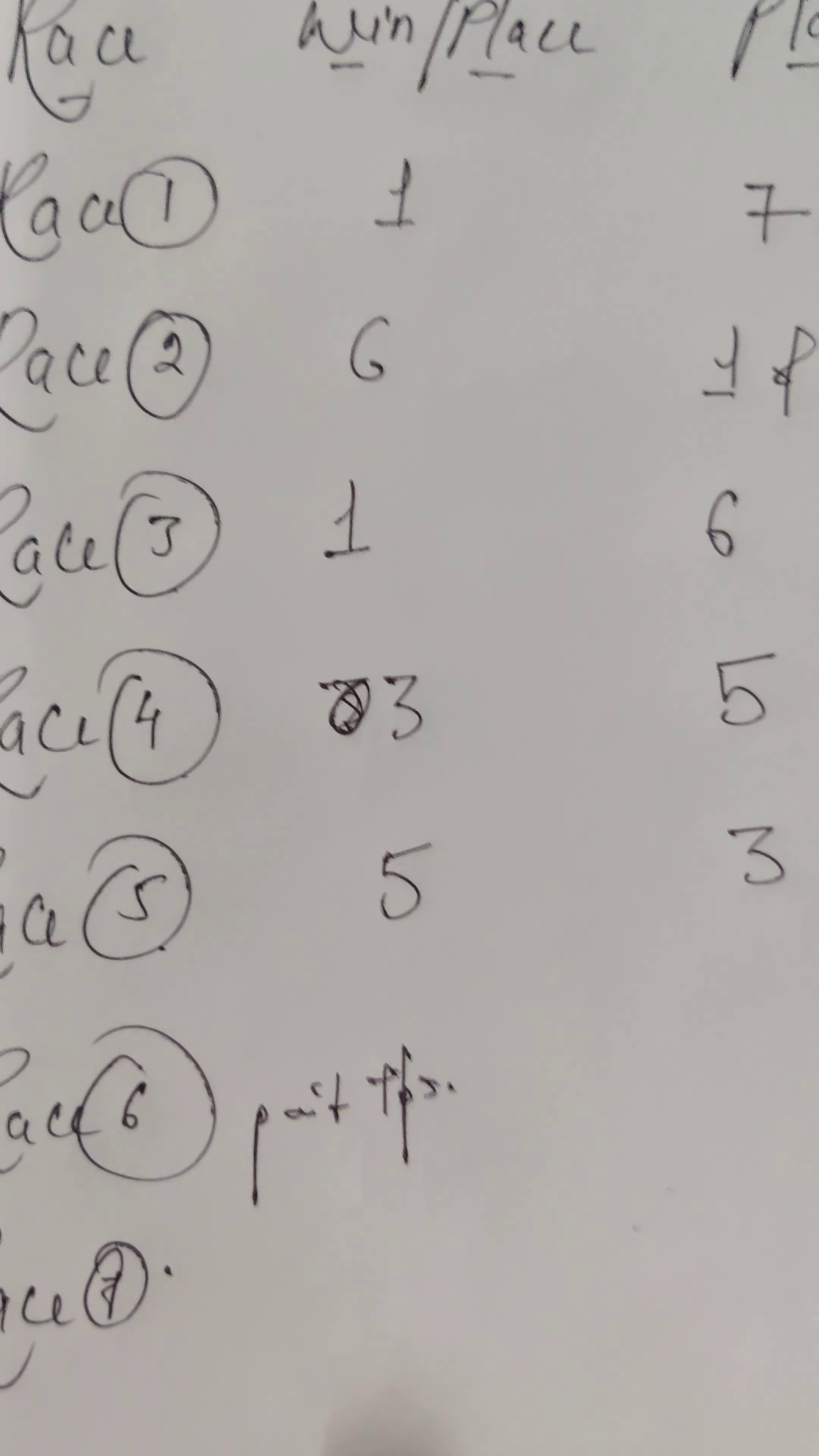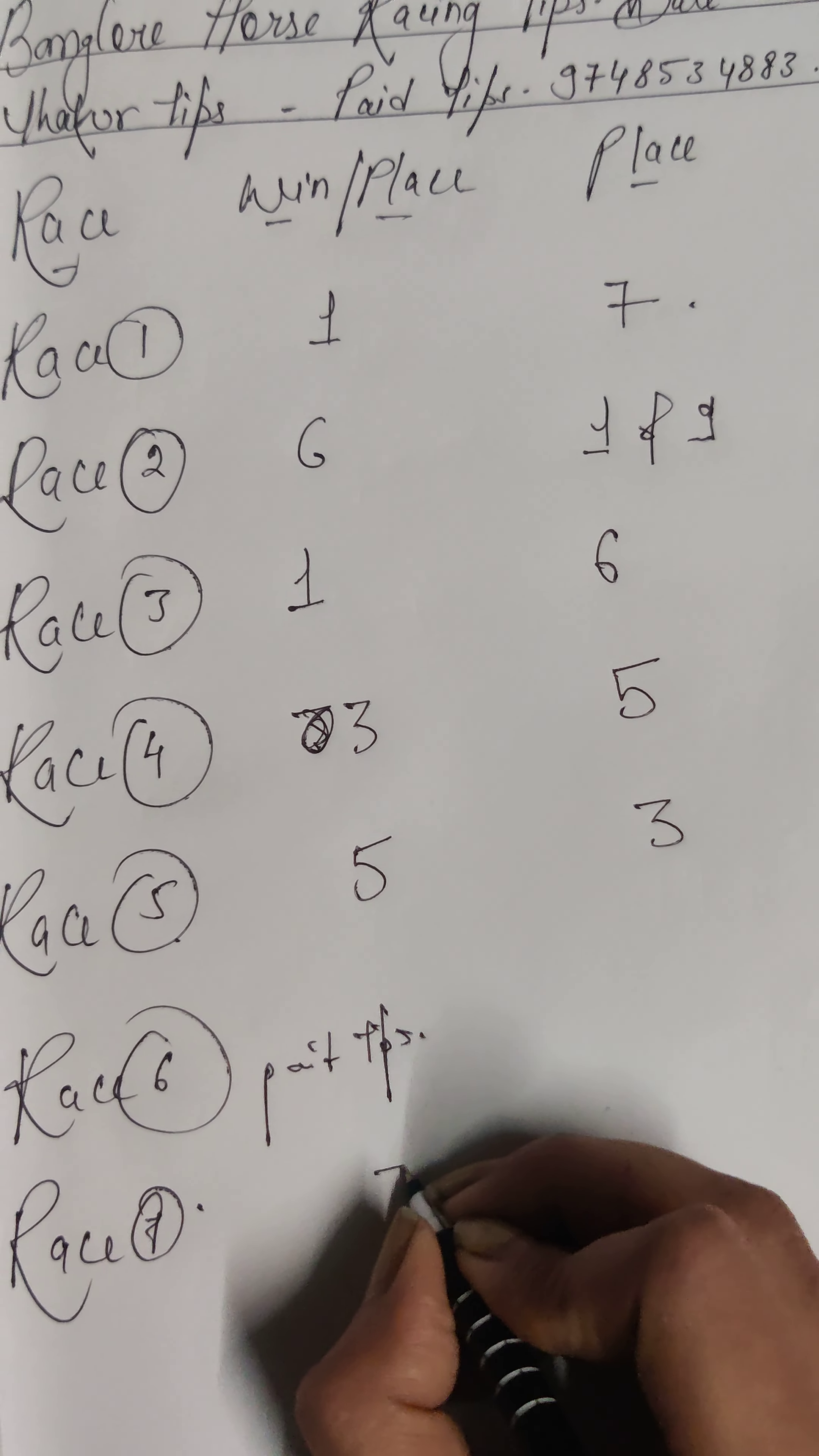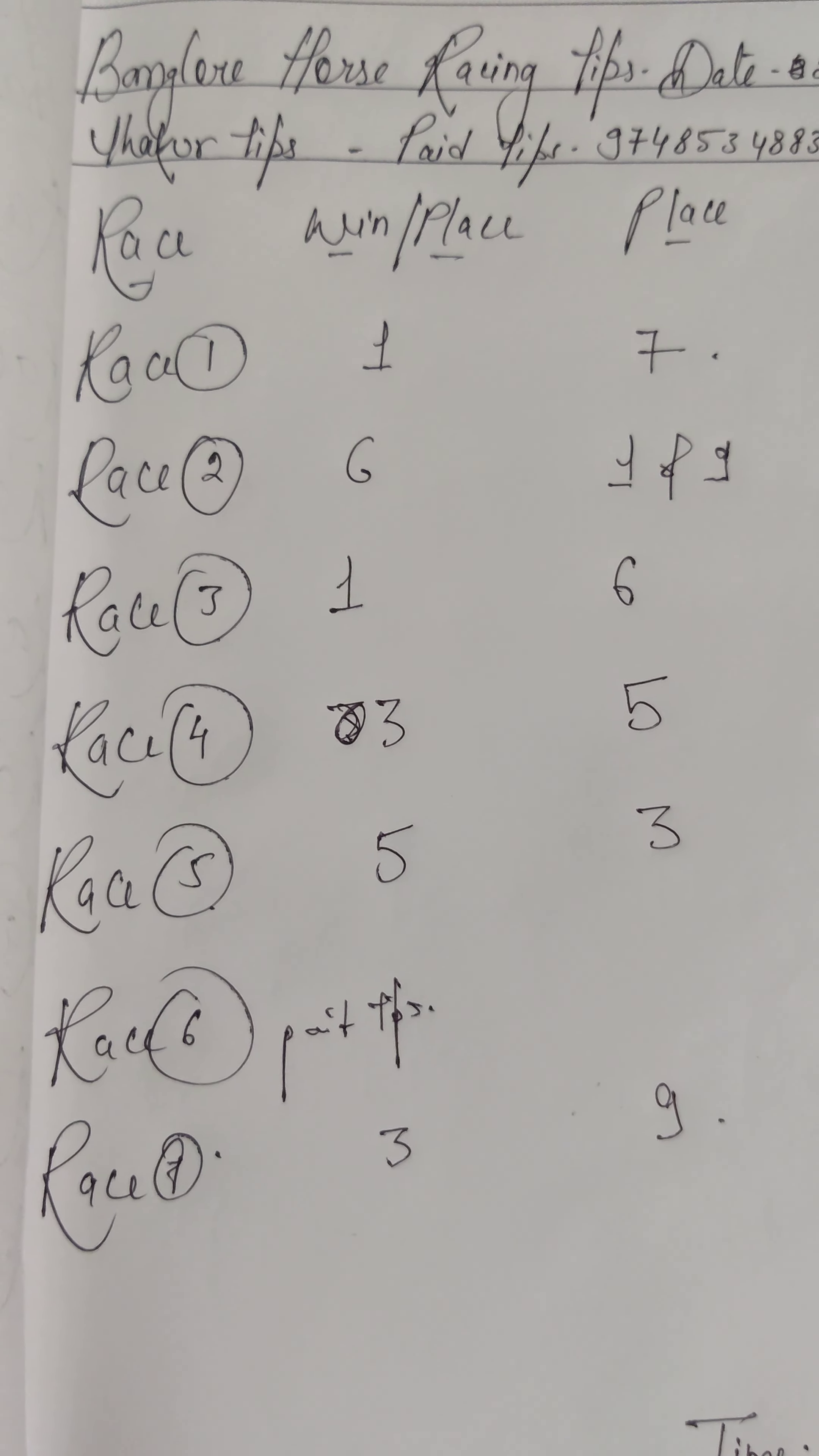So moving on to last race, which is race number 7. Here my first choice is horse number 3, and my second choice is horse number 9. So here are overall Karnataka race tips. And you follow the line, follow which line you should focus more on that line. First thing, second place you should be first preference.